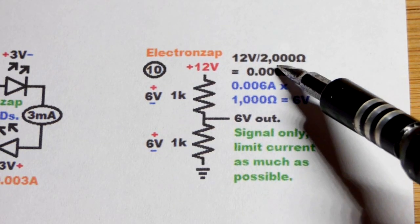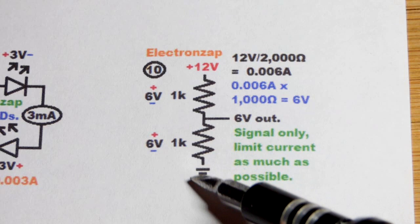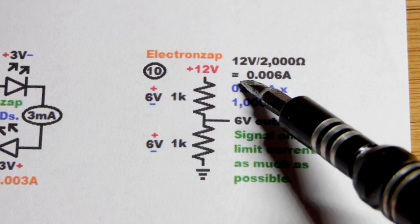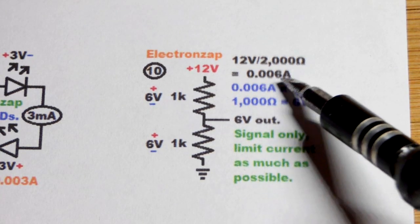So their total resistance is 2000 ohms. It's going through 2000 ohms of resistance from one end to the other. Giving us 6 milliamps of current, which is the same as 0.006 amps.